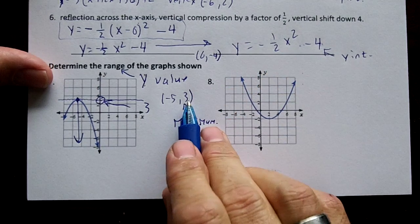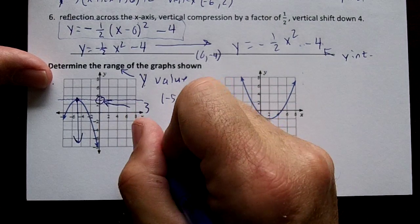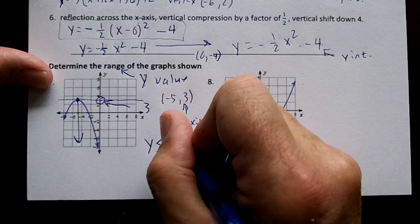That means on our t-chart, three would be the largest value ever for y. So this means y is less than or equal to three.